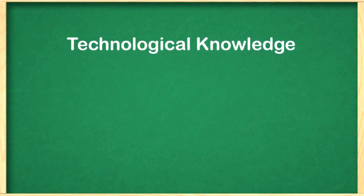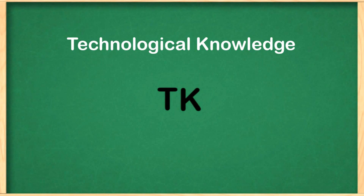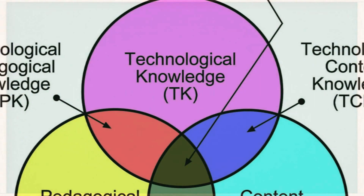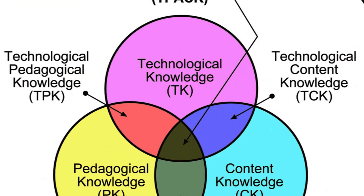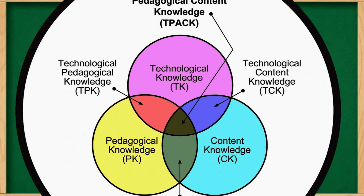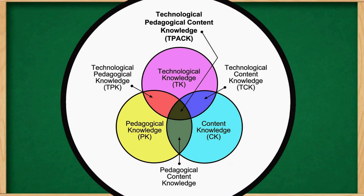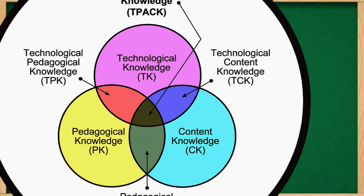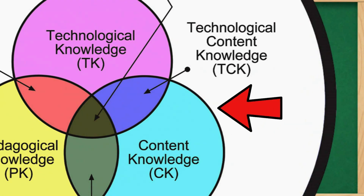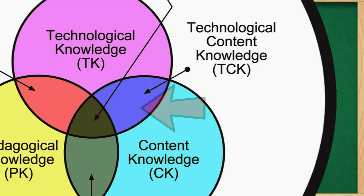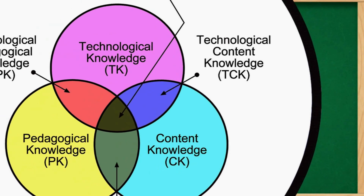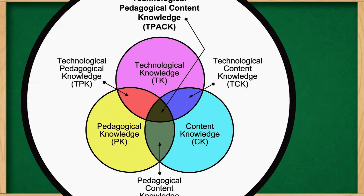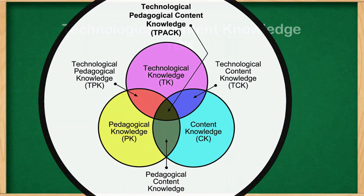This technological knowledge, or TK, needed to be included in the discussions about the knowledge teachers must have in order to teach today's students. In 2006, Mishra and Kohler modeled this knowledge as an additional circle in the Venn diagram. They described the overlap of technological knowledge with content knowledge as TCK, or technological content knowledge, explaining that teachers now had to have knowledge about the technology tools that were part of the discipline or content area.